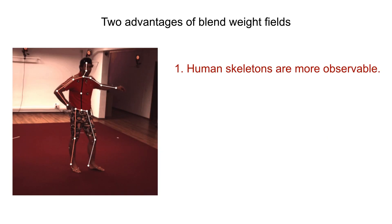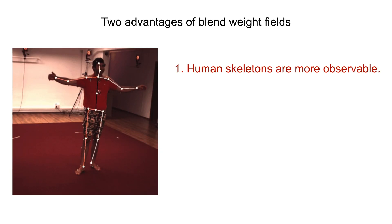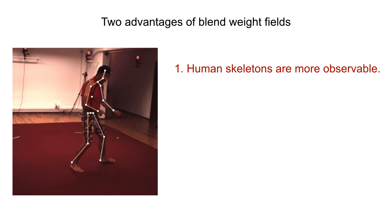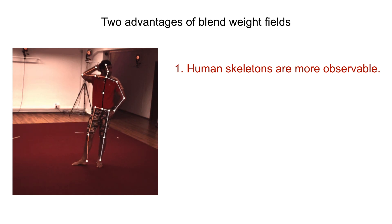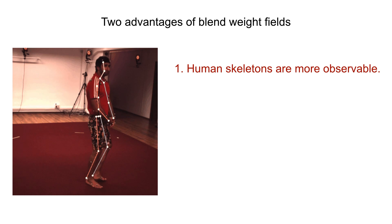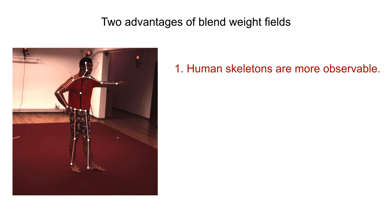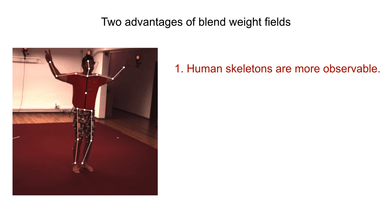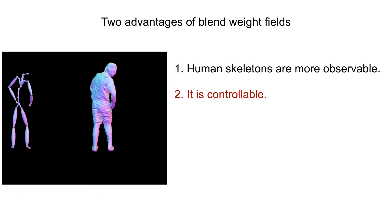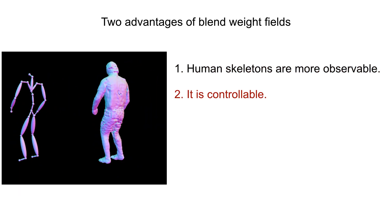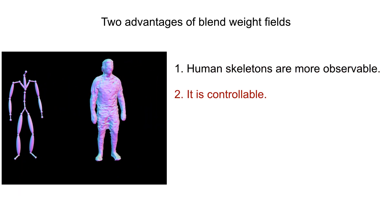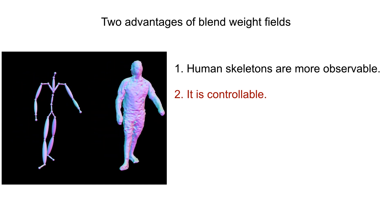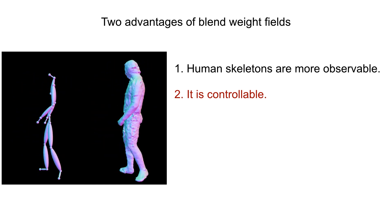This representation has two advantages. First, since the human skeleton is easy to track, it does not need to be jointly optimized and thus provides an effective regularization on the learning of deformation fields. Second, by learning an additional neural blend weight field at the canonical space, we can explicitly animate the human model with input skeletal motions.